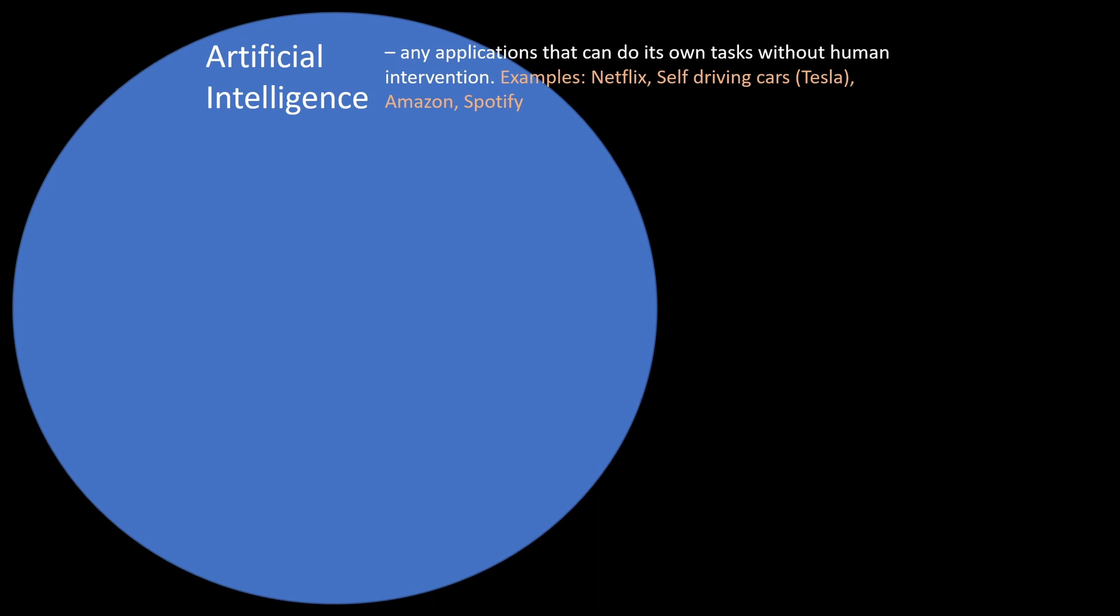And Tesla with their self-driving cars, for example, those don't require any human intervention. And we also have Amazon, which recommends items for you to purchase. And those also don't require any human intervention. And we also have Spotify with their music recommendation, right?